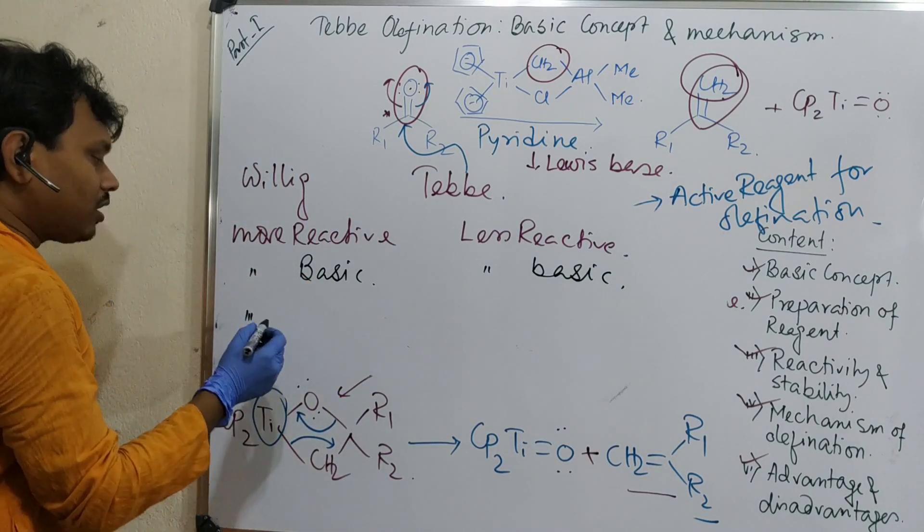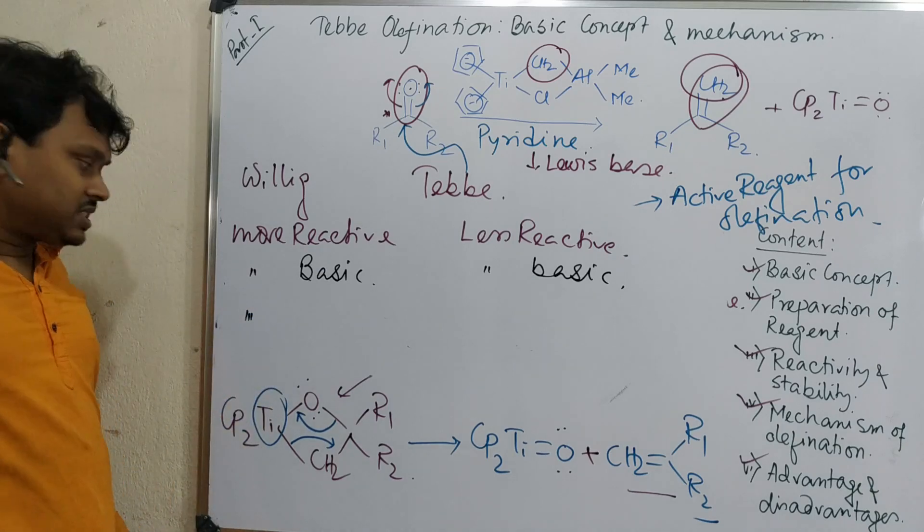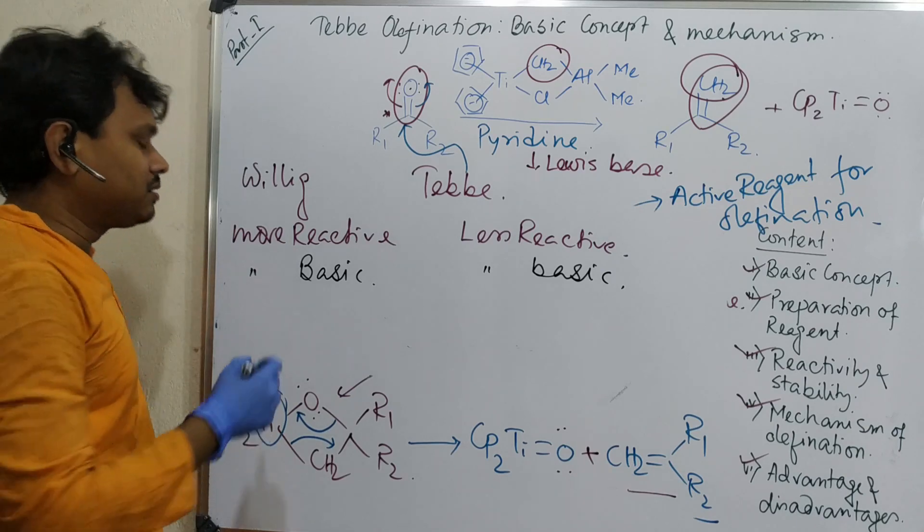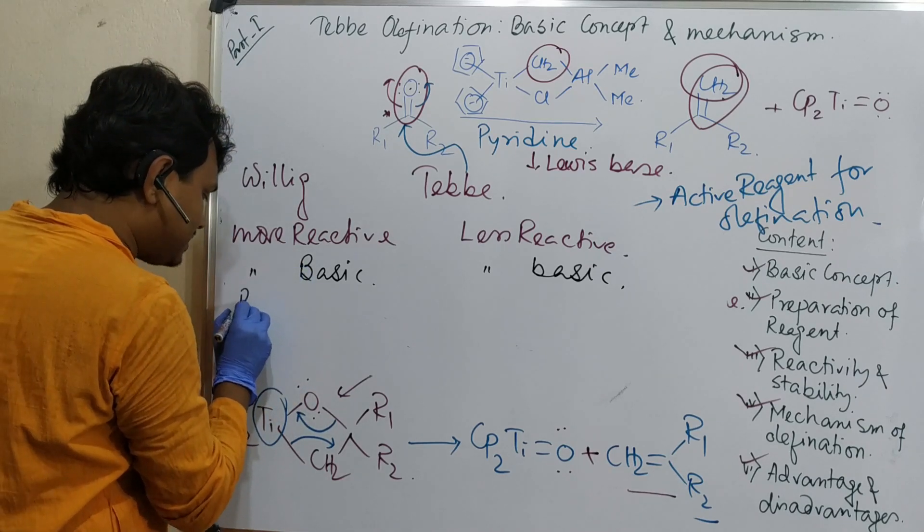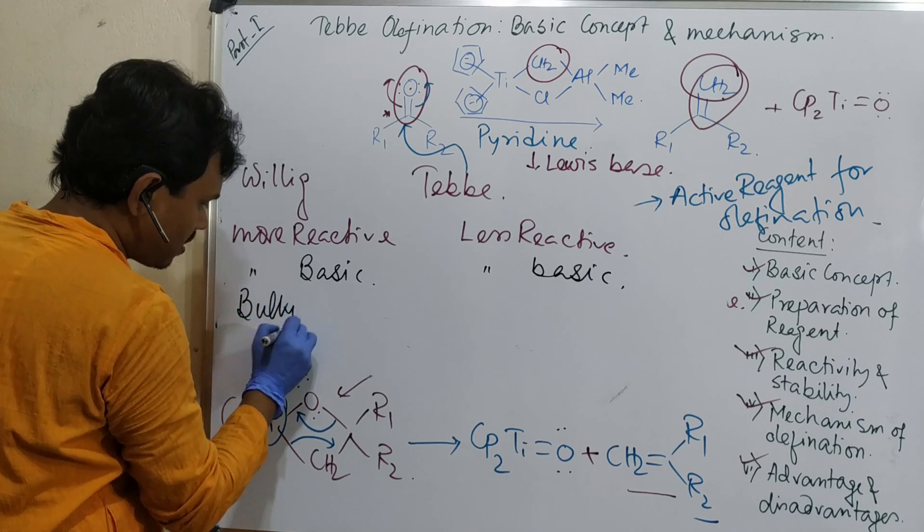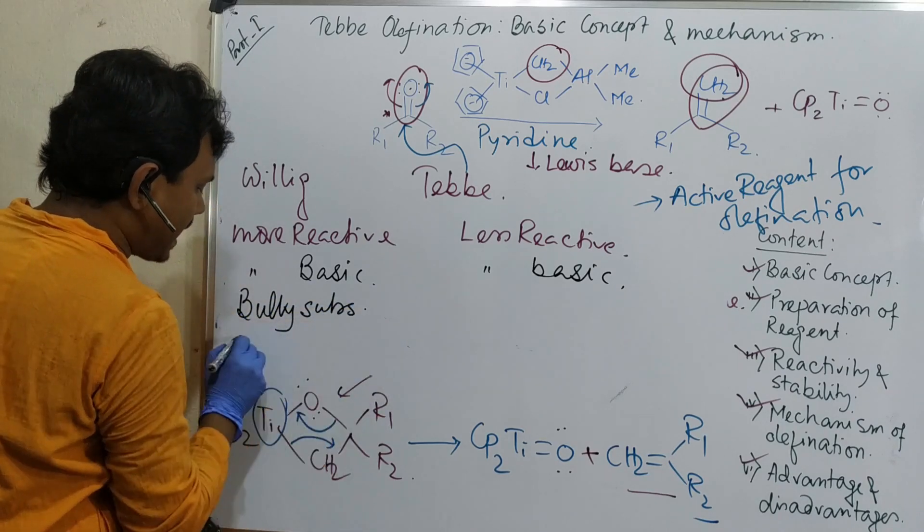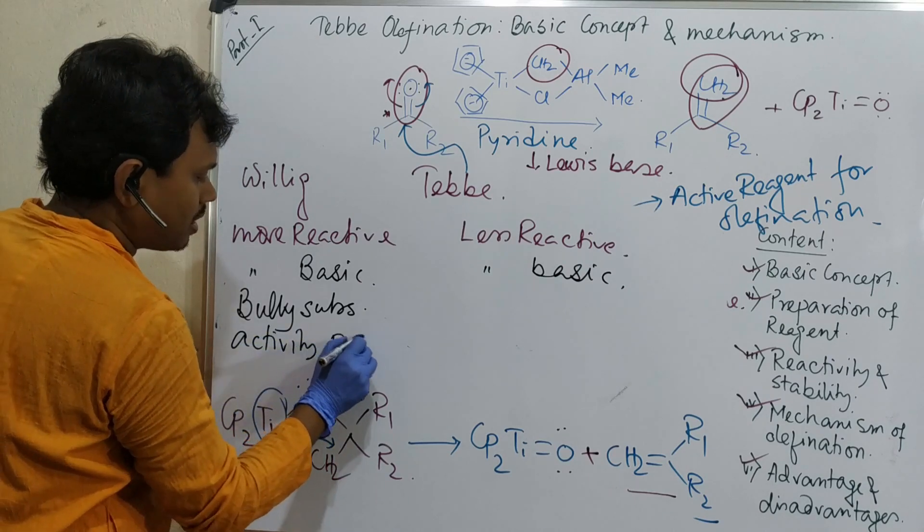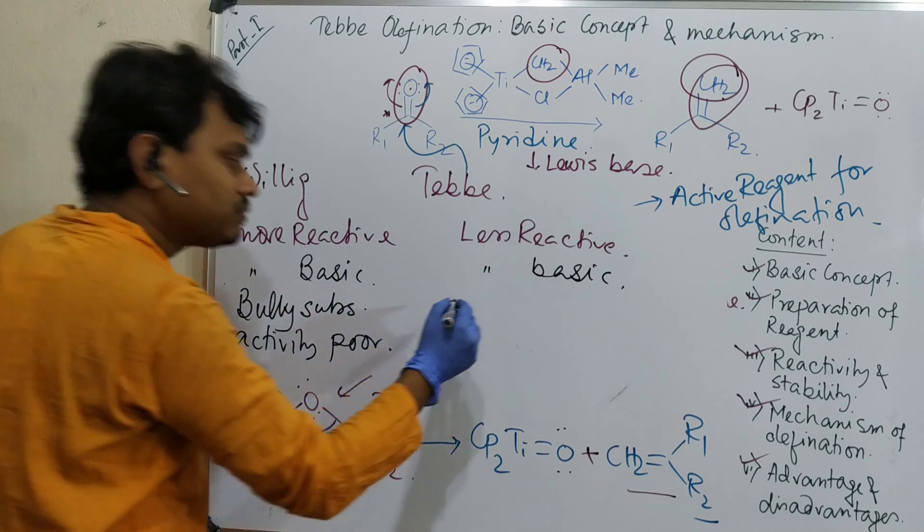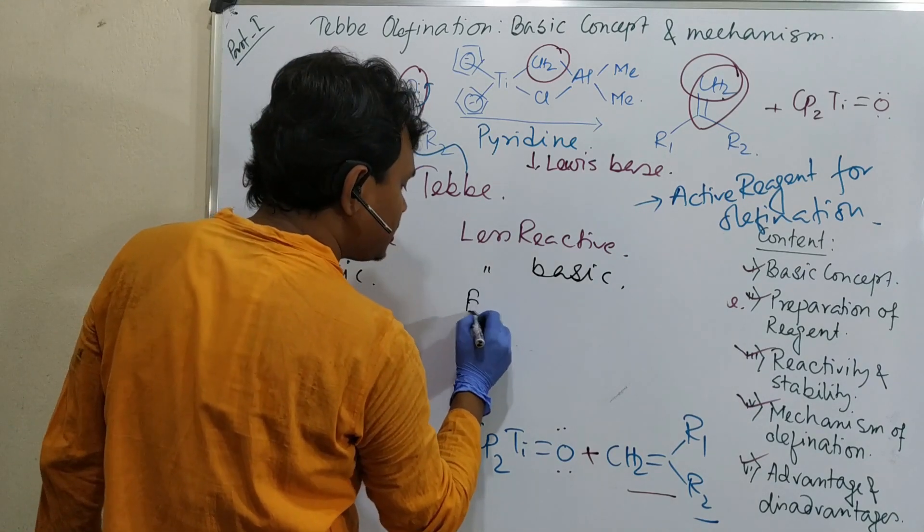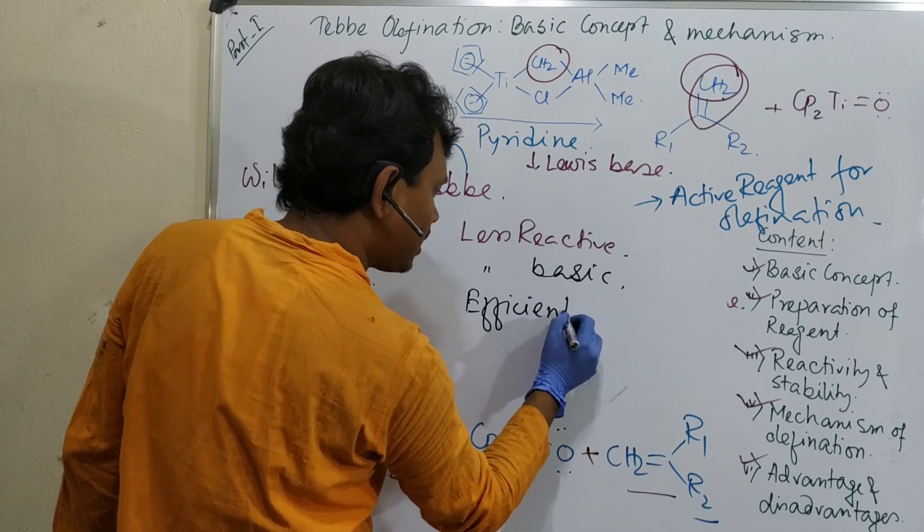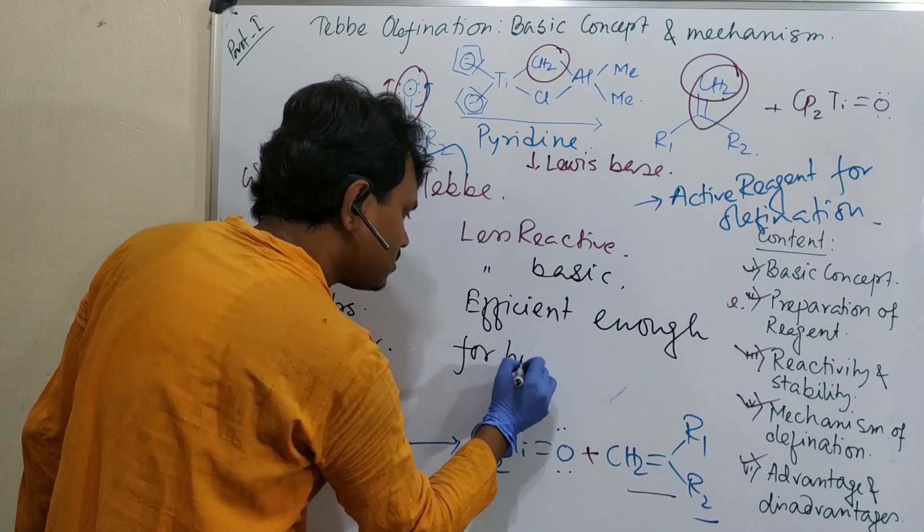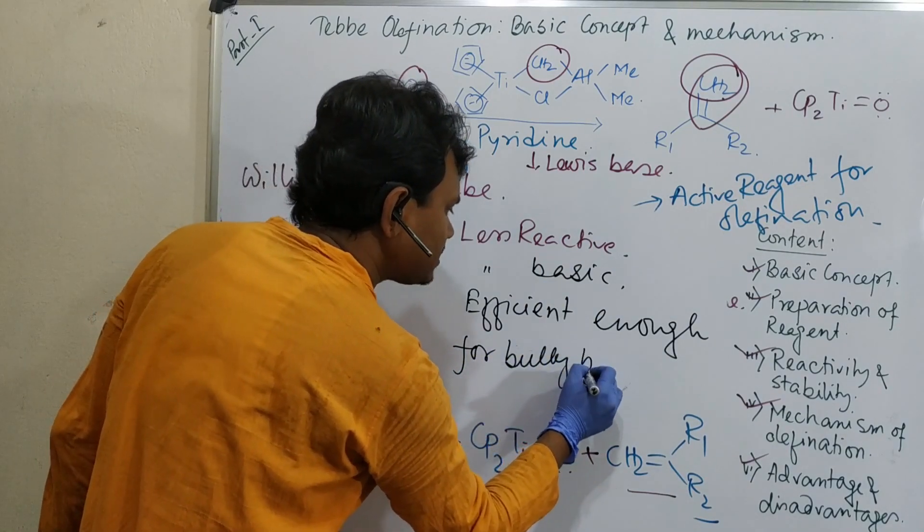Point number three, that Wittig reagent for sterically, sterically crowded thing, Wittig doesn't work well. For bulky substrate, bulky substrate activity is poor. But this is efficient enough for bulky substrate.